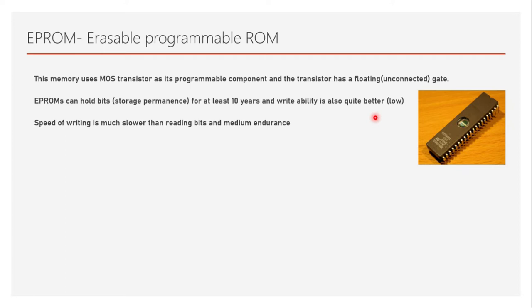To give you an example, reading may take tens of microseconds whereas writing will take tens of milliseconds. Endurance is the number of times the memory can be programmed and erased, and it has medium endurance — a few thousand times it can be written and erased.